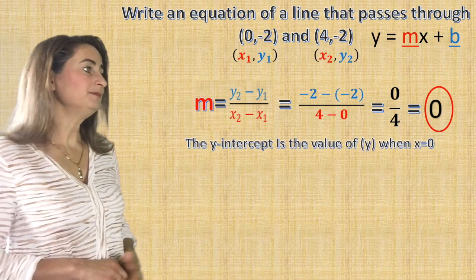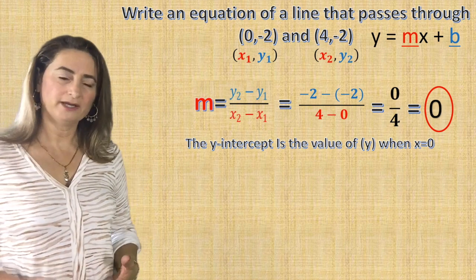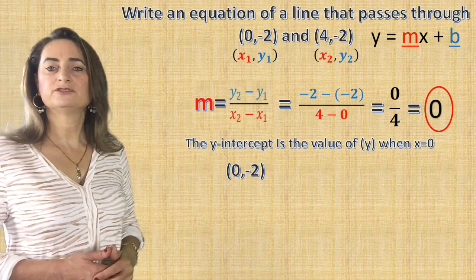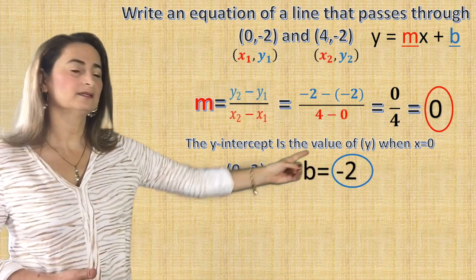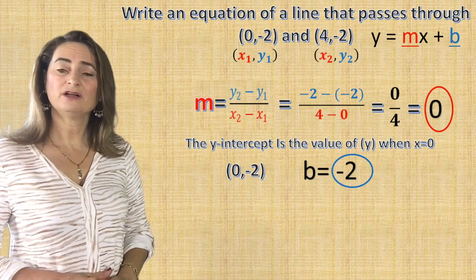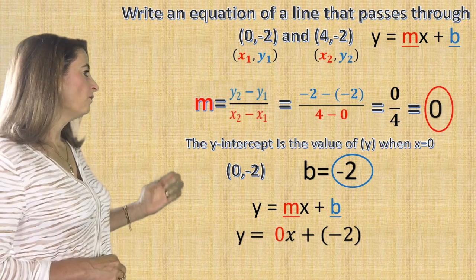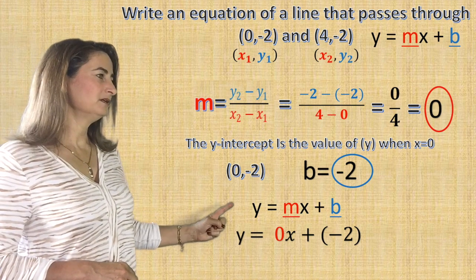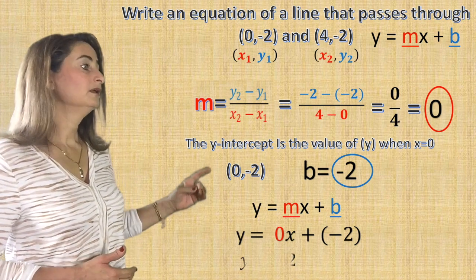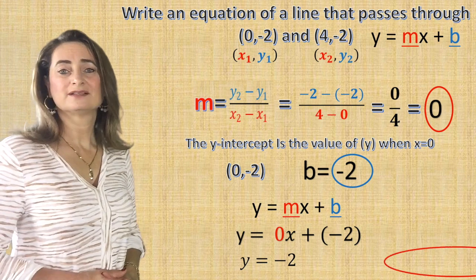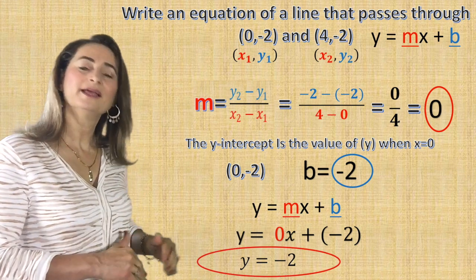The y-intercept is the value of y when x equals zero. Did they give us that information already? Yes — the coordinate (0, negative 2), where x is 0 and y is negative 2, so b equals negative 2. Now substitute the slope and y-intercept in the equation: y equals zero times x plus negative 2. Simplify — zero times x is zero, plus negative 2, you end up with y equals negative 2. And that is a horizontal line crossing the y-axis at negative 2.